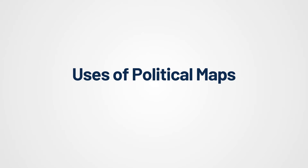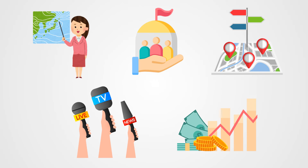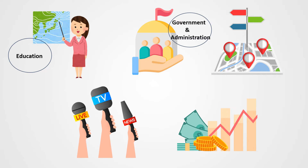Now let's learn the uses of political maps. First use is in education — political maps are an important tool in education, helping students learn about the political division of the world, including the location of countries, states, and cities. Second is government and administration — these maps are used by governmental and administrative bodies to manage regions, plan developments, and implement policies.